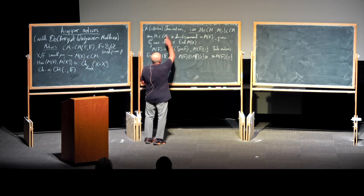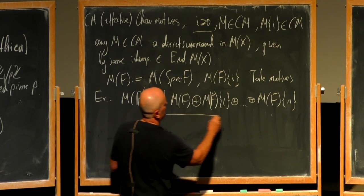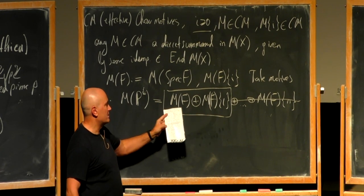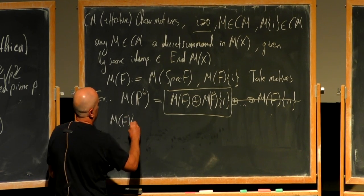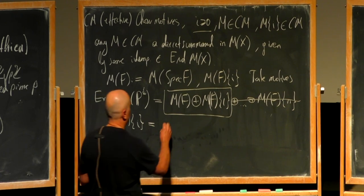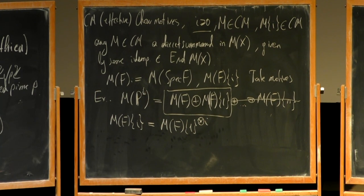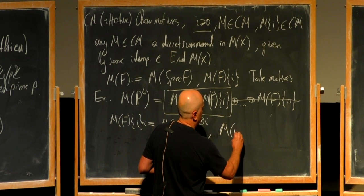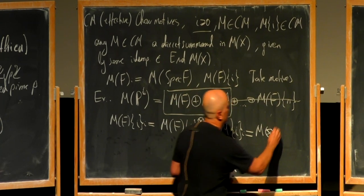An important motive is the motive of the point, M of F, which is M of Spec F. I can shift it by any non-negative i; all of these I will be calling Tate motives. To explain the appearance of this shift functor: if you apply this for n equals 1, you can define M of F of 1 as the complementary summand to M of F in the motive of the projective line, and M of F of i will be the i-th tensor power of this one. This category has tensor structure induced by the direct product of varieties, and M of i for arbitrary m is defined as the tensor product of m with M of F of i.